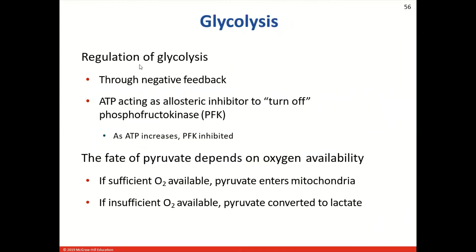How do we regulate glycolysis? We do this through negative feedback. ATP also acts as an allosteric inhibitor to turn off phosphofructokinase (PFK). Therefore, as ATP increases, PFK is inhibited. One of the products of glycolysis is pyruvate, and the fate of pyruvate actually depends on the availability of oxygen. If we have a sufficient amount of oxygen available, it's going to move into the mitochondria. If we have an insufficient amount of oxygen available, it actually then gets converted to lactate.